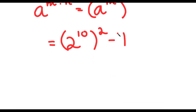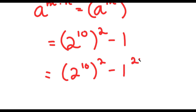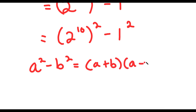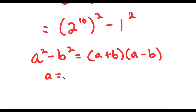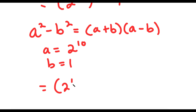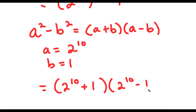Now, I can rewrite 1 as 1 squared, since 1 is the same as 1 squared. So now I have 2 to the power of 10, to the power of 2, minus 1 squared. I can now use the property a squared minus b squared equals a plus b times a minus b, where a equals 2 to the power of 10 and b equals 1. This gives 2 to the power of 10 plus 1, times 2 to the power of 10 minus 1.